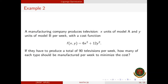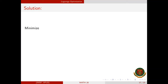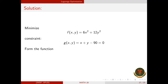We must minimize f. The constraint is x + y = 90, but since the constraint must equal zero, g(x,y) = x + y − 90 = 0. Now forming capital F: F(x,y,λ) = 6x² + 12y² + λ·(x + y − 90).